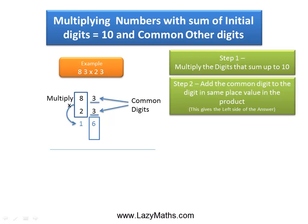The next step is to add the common digit 3 to 16, and we have 16 plus 3 is 19, and this becomes the left-hand side of the answer.